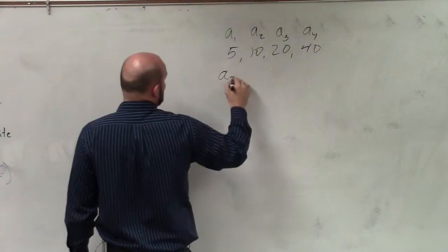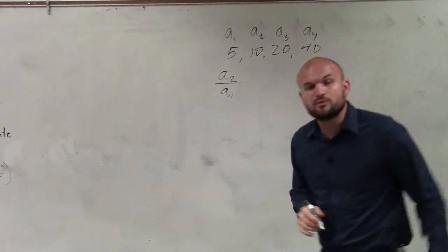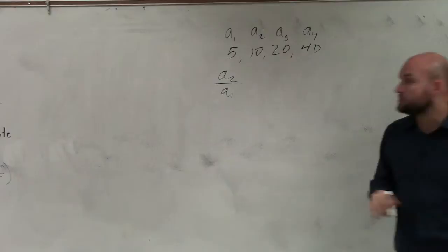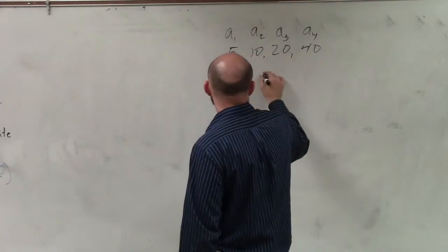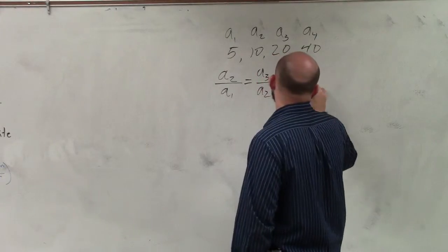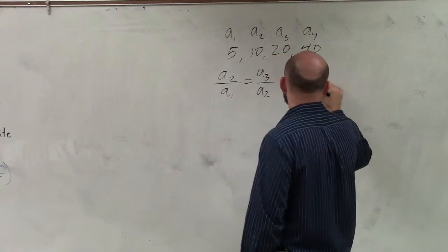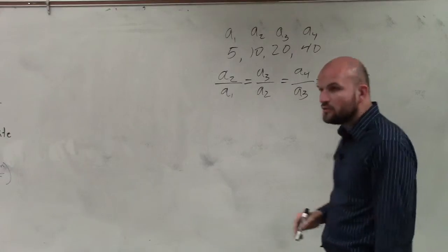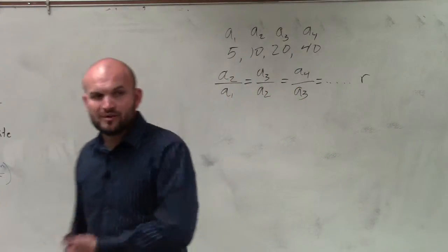In this case, what we're going to simply do is find the ratio. So we're going to compare a sub 2 over a sub 1. That has to be equal to a sub 3 over a sub 2, which has to be equal to a sub 4 over a sub 3, which equals for all of those r, which we call our common ratio.